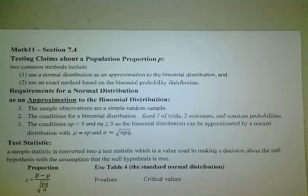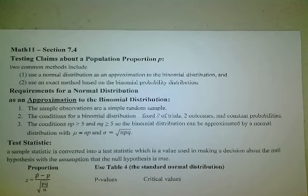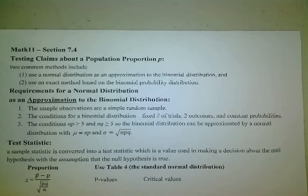There are two common methods for testing a claim about a population proportion. You can use a normal distribution as an approximation to the binomial distribution - the same kind of thing we've been doing using Z scores - or we can use an exact method based on the binomial probability distribution.